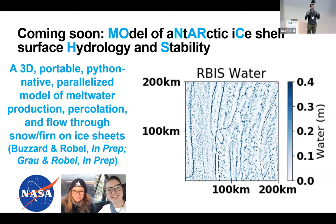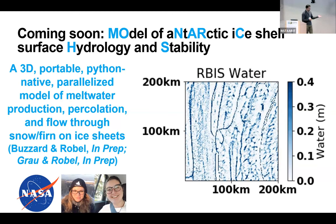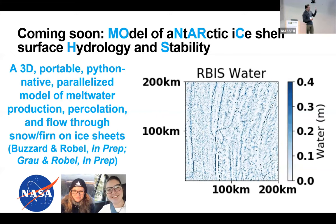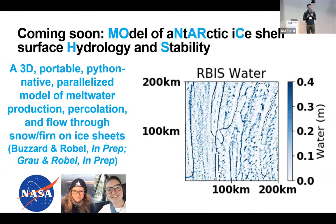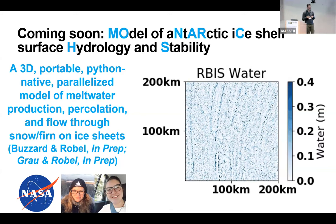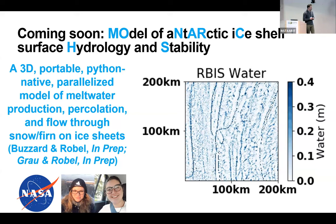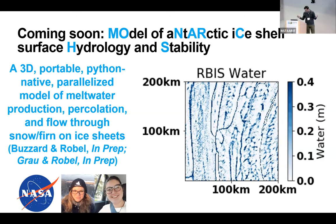Briefly, I want to mention another project that hydrologists will find interesting: a NASA-funded project called MONARCHS, led by former postdoc Sammy Buzzard at Cardiff and PhD student Danny Brau. It is a 3D hydrology model — portable, Python-native, and parallelized — for water flow on the surface of ice sheets. The interesting physics here involves a liquid that is dissolving the solid material it is made of, making it a fascinating problem in percolation physics, hydrology, and boundary layer dynamics.